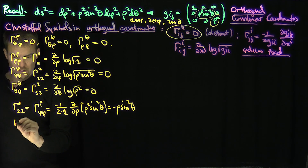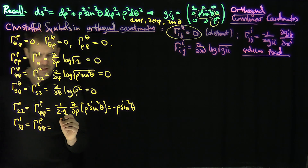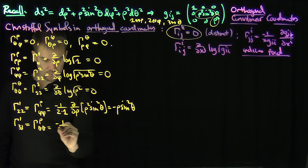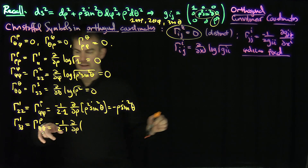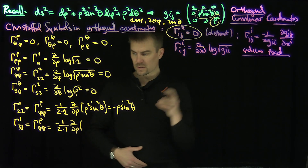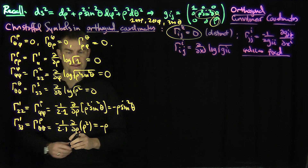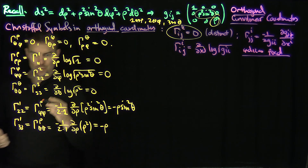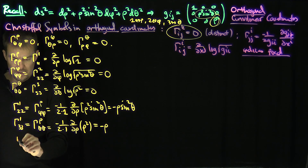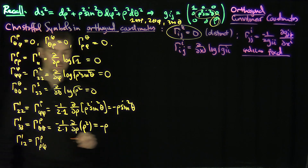Let's do γ^(ρ,θ,θ) = γ^1_33. By the same formula, with i=1 we get −(1/2)·1 times the ρ-derivative of the θθ entry g_33 = ρ². That gives us −ρ. Now let's do the mixed ones: γ^(ρ,ρ,φ) = γ^1_12.